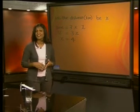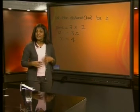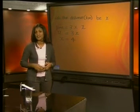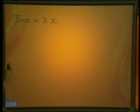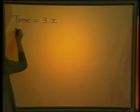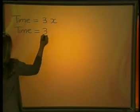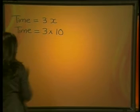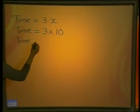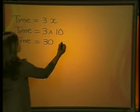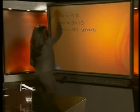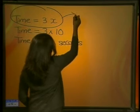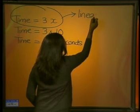Now, if the distance between us and the lightning strike is 10 kilometers, we can calculate how long it will take before we hear the thunder. Our equation is time equals 3x. The distance is 10 kilometers, so time equals three times 10, which means our time equals 30 seconds. This equation — time equals 3x — is an example of a linear equation.